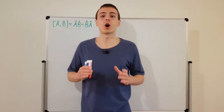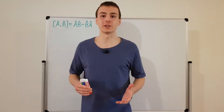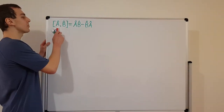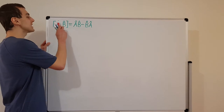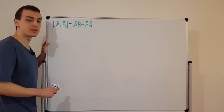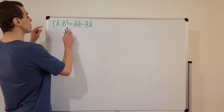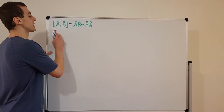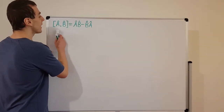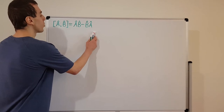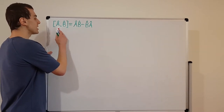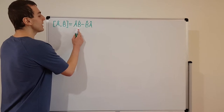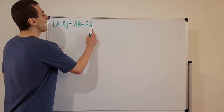Let's take two arbitrary operators and call them A and B. We put little hats on top because hats denote operators in quantum mechanics. This square bracket notation is the commutator, defined as follows: if we take the commutator of A and B, we first do AB and then subtract off BA.